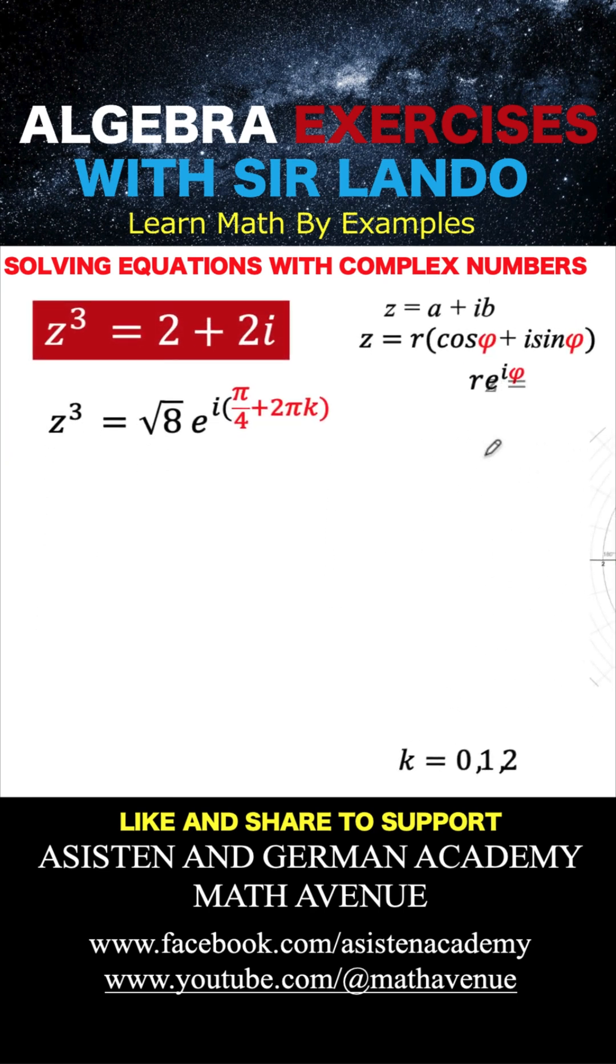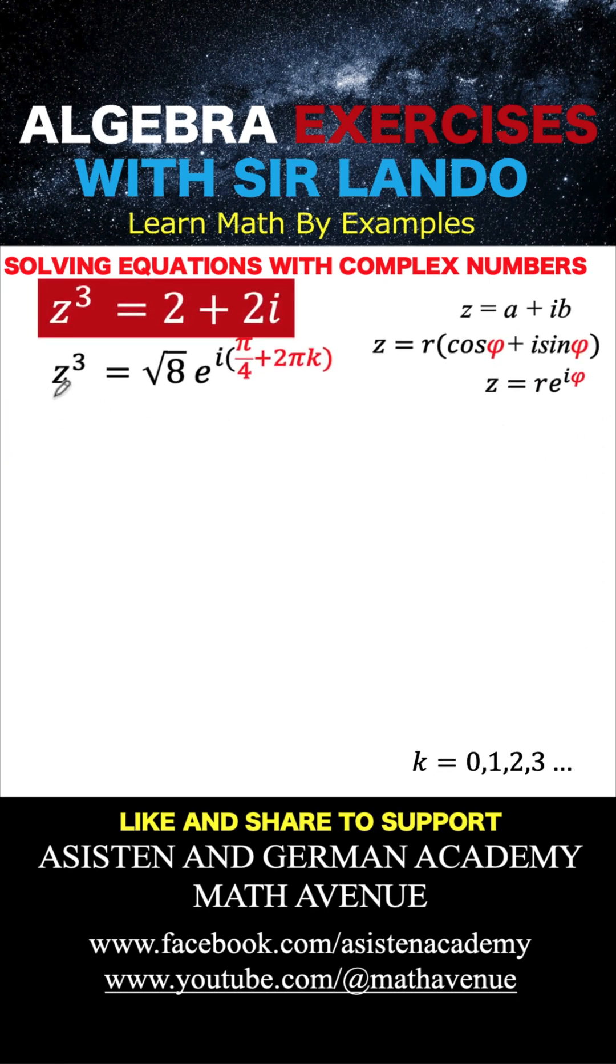Now, our problem is we are looking for z such that when you raise it to the third power, the result is this right side. Since this is exponent 3, we can eliminate the exponent 3 by raising both sides of this equation to exponent 1 third. So let's do that. If we raise this to 1 third, that becomes z only, then we raise the right side into 1 third. But this k must be defined to be k equals 0, 1, 2, 3, and so on. And therefore, the solution that we arrive at here would depend on what is that particular value for k.